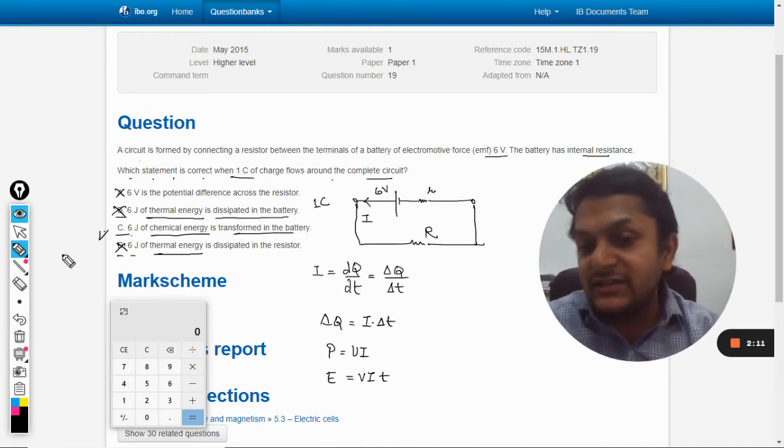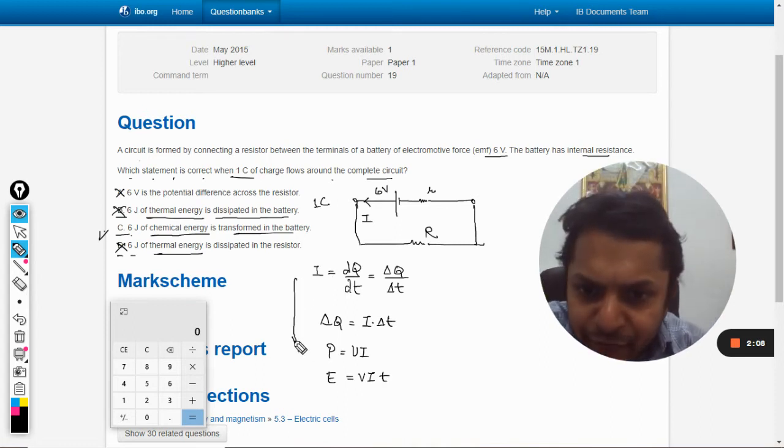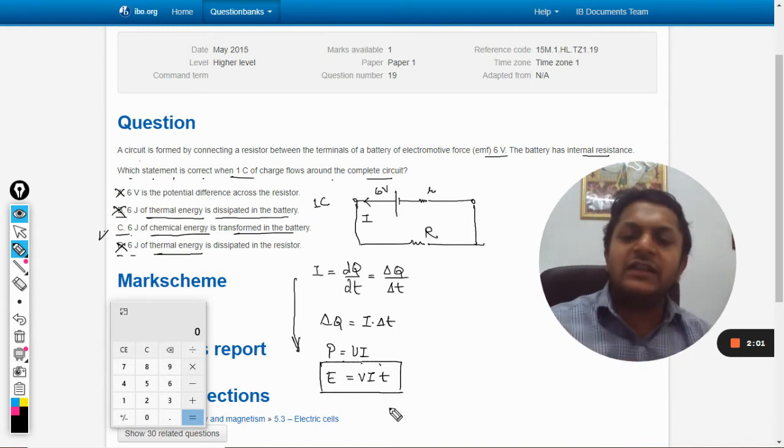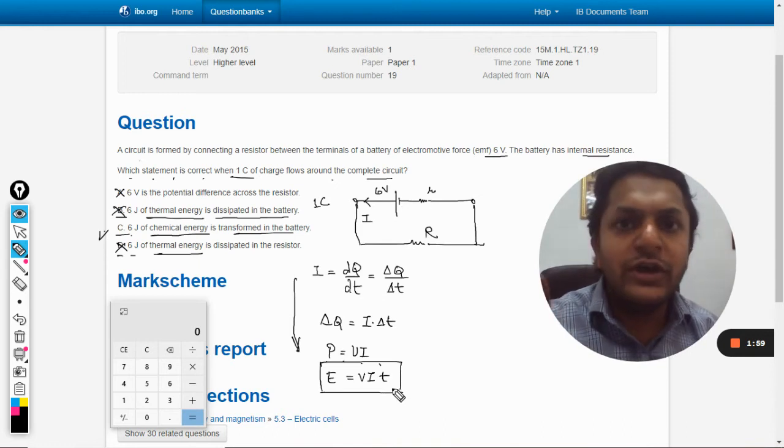But are we getting this answer and how to get this answer? So by following this explanation, we have power is equal to VI, and energy given by the battery should be given by the formula E is equal to VIt.